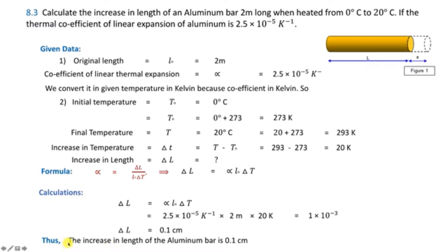The coefficient of thermal expansion alpha is 2.5 × 10⁻⁵ per Kelvin. Initial temperature is 0°C = 273 K. Final temperature is 20°C = 293 K. The increase in temperature ΔT = 293 − 273 = 20 K. We now need to find the increase in length.